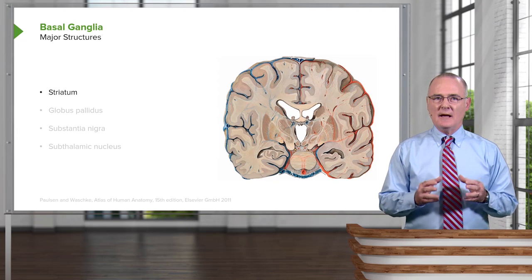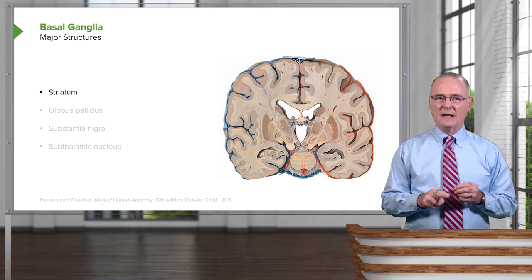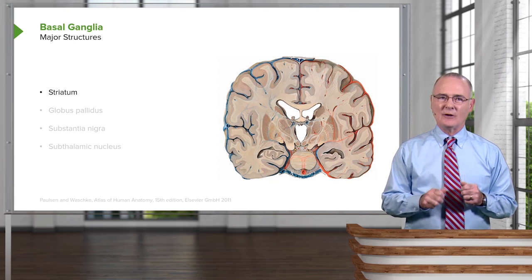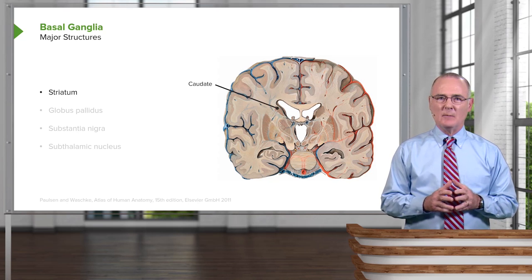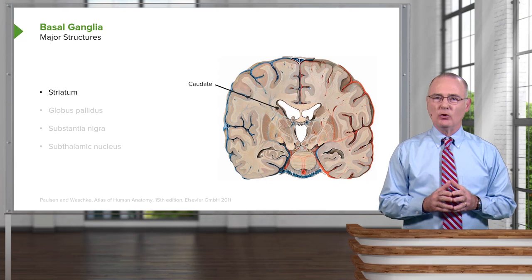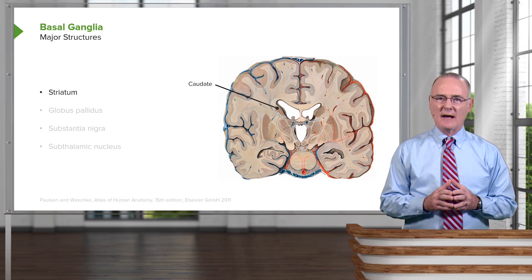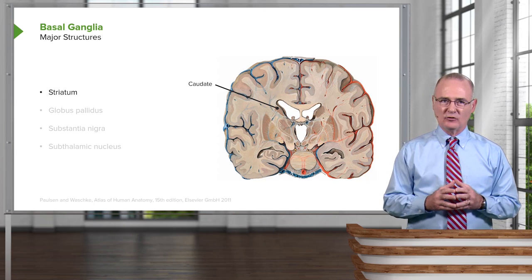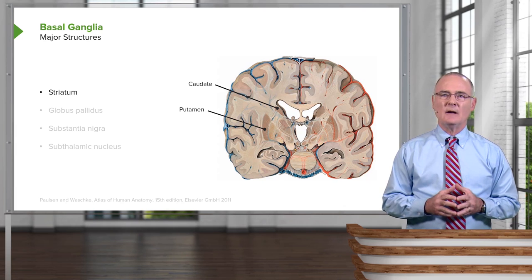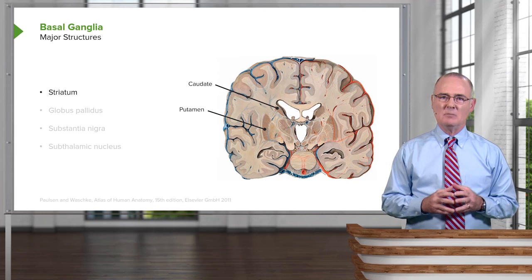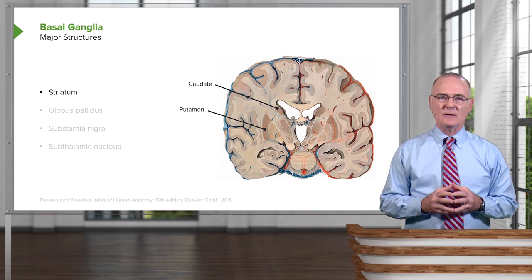First, we have two structures that collectively constitute the striatum. One of those members is the caudate nucleus, seen here in the lateral aspect of the lateral ventricle. The second member of the striatum is the putamen, labeled next on this image.